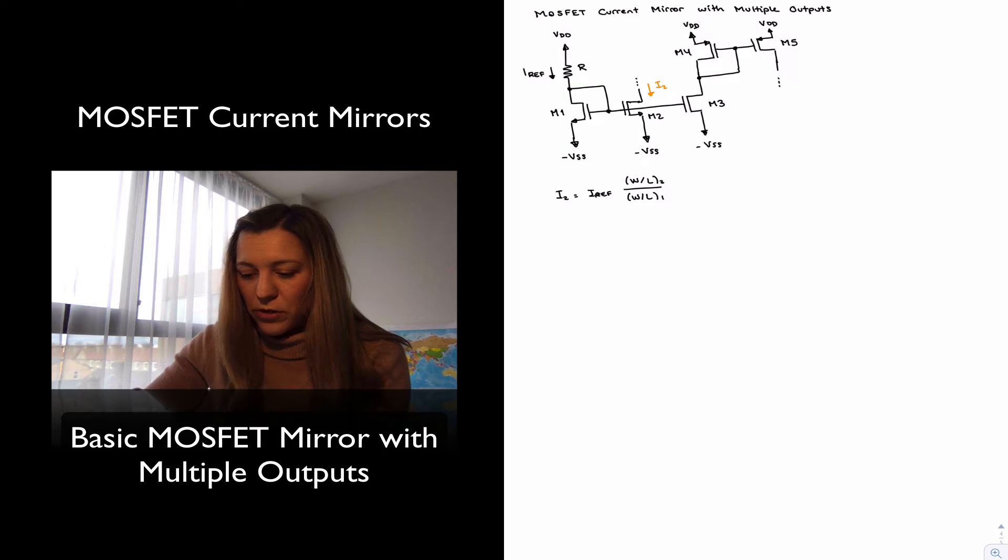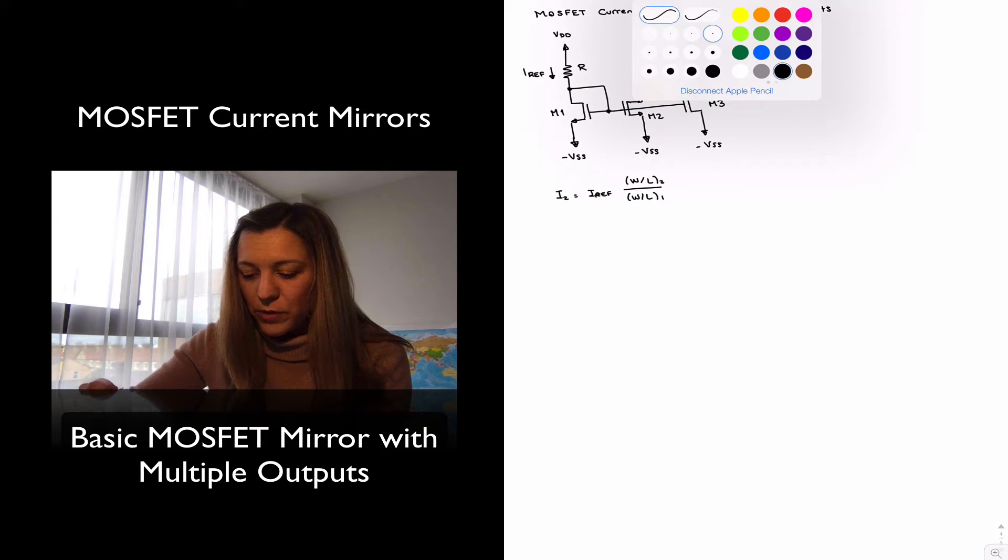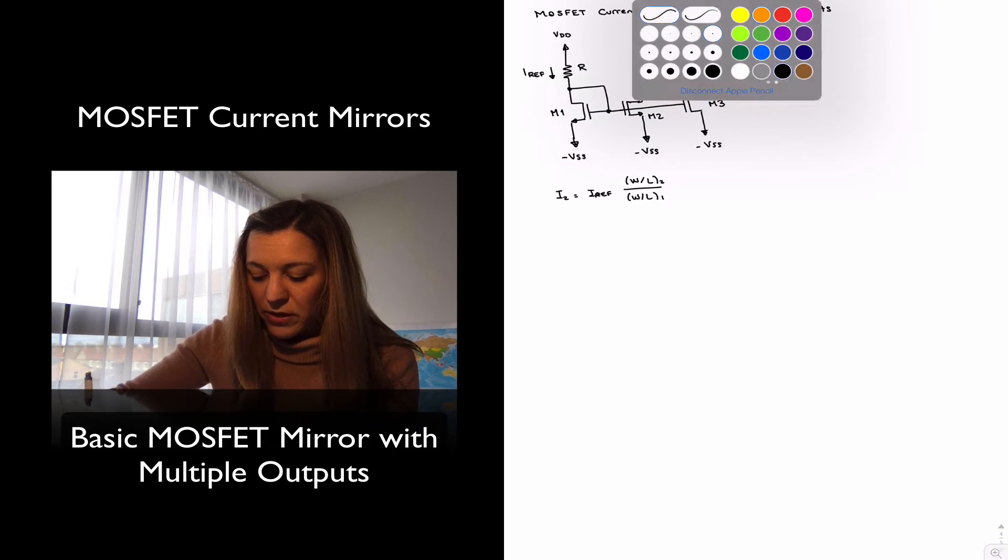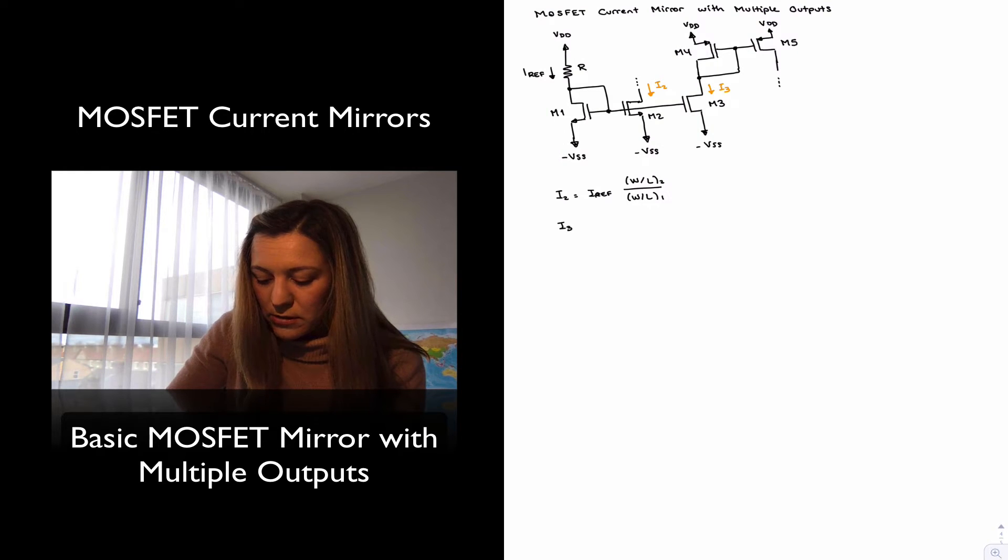Then the same current will appear through I3 because it's part of the same mirror. The same thing applies to I3, where it is equal to I ref times width over length of transistor 3 divided by width over length of transistor 1.